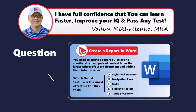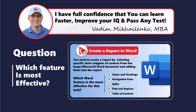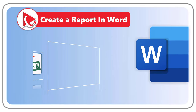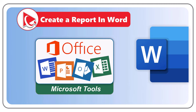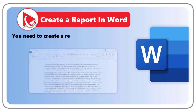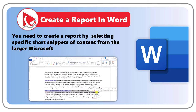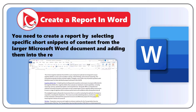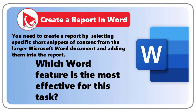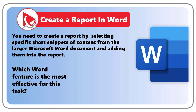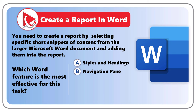Here's a very stimulating assessment test question. It boosts your analytical skills and enhances your ability to approach complex problems using Microsoft tools effectively. You need to create a report by selecting specific short snippets of content from a larger Microsoft Word document and adding them into the report. Which Word feature is the most effective for this task? You're presented with five possible choices: Choice A, Styles and Headings; Choice B, Navigation Pane; Choice C, Spike; Choice D, Find and Replace; and Choice E, Table of Contents.